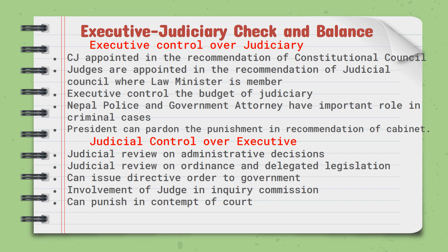How does the judiciary control the executive? The judiciary reviews administrative decisions and reviews ordinances and delegated legislation. The judiciary can issue directive orders to the government. Judges are also involved in inquiry commissions. The judiciary has the power to punish for contempt of court. This is how the judiciary controls the executive.